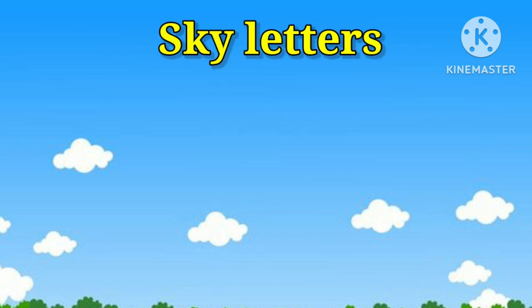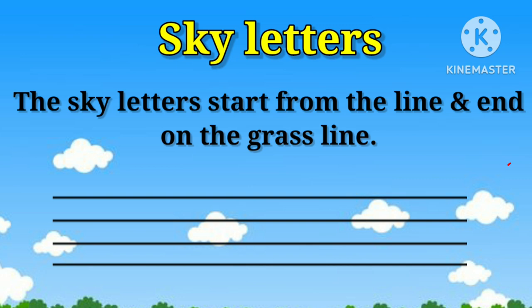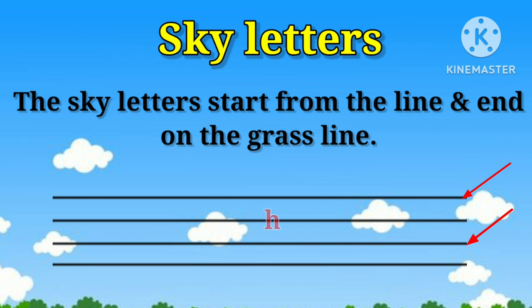Now let's move on to the first group, that is the sky letters group. The sky letters start from the skyline and end on the grass line. There are seven examples of sky letters: B, D, F, H, K, L, and T.